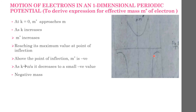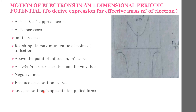This implies a negative mass, which can be understood from the velocity versus k graph. After the point of inflection, the velocity decreases, so acceleration is negative — that is, the acceleration is opposite to the applied force. Here the lattice exerts a large retarding force on the electron such that it overcomes the applied force and produces a negative acceleration.